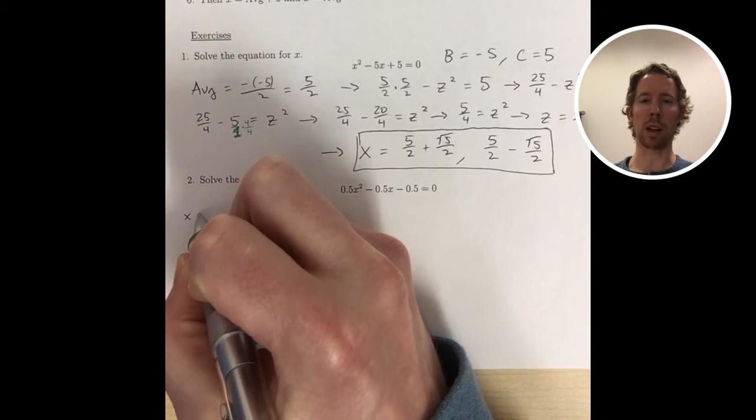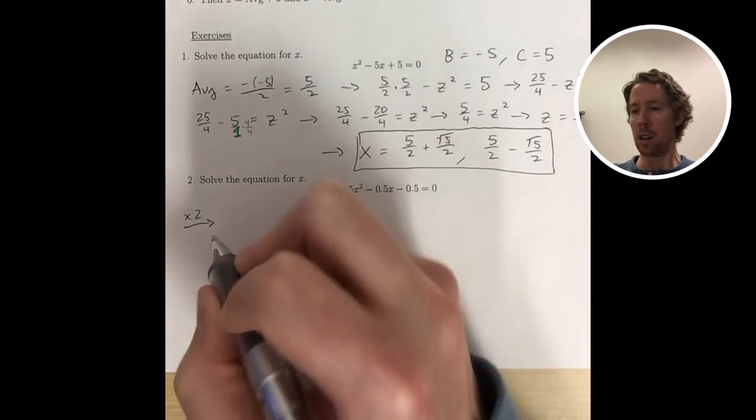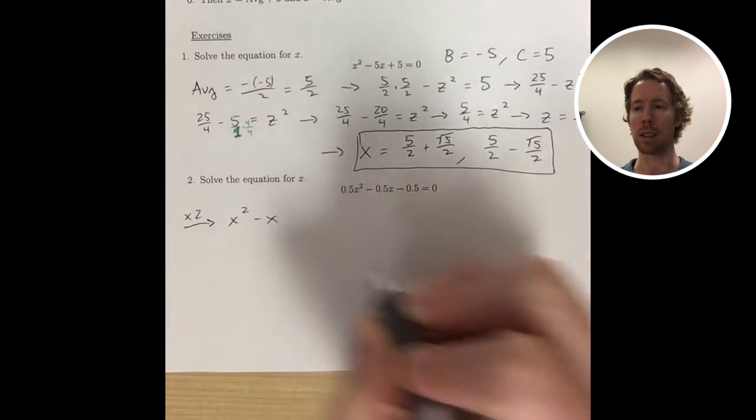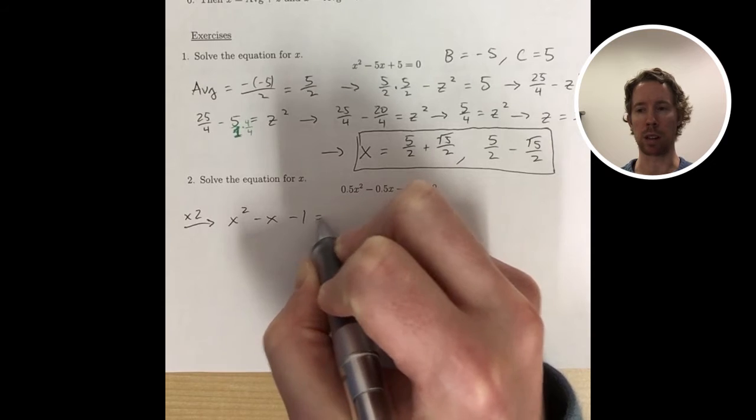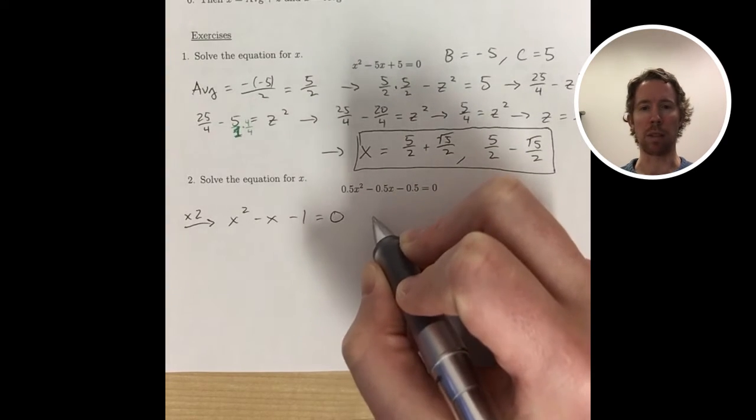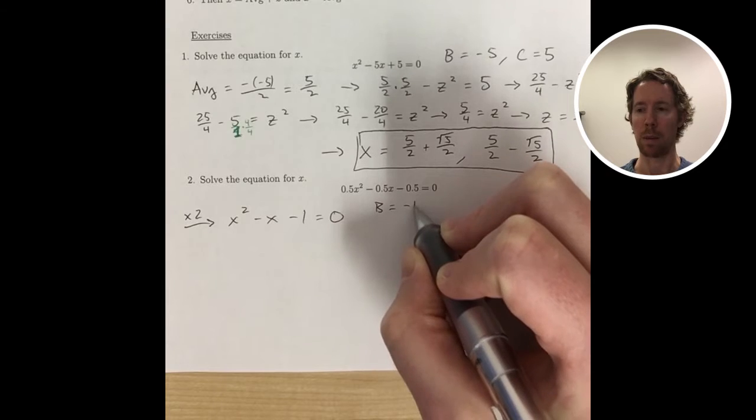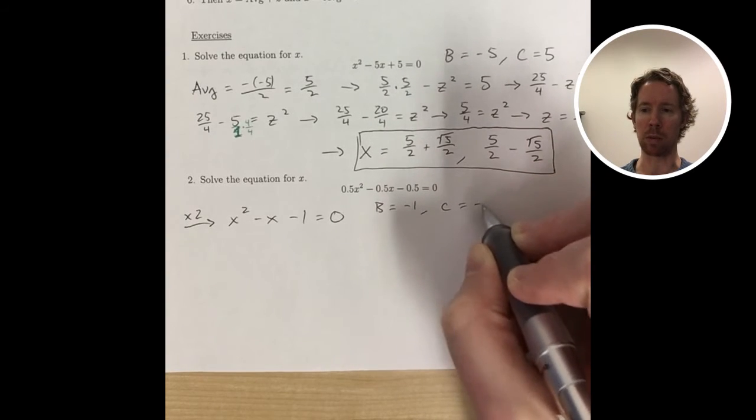In number two, I'll start by multiplying everything by 2. You might start by multiplying everything by 10 in this problem, which would get rid of all the decimals, and then divide by 5 because you have a common factor of 5. You can do both those steps in one by just multiplying by 2.